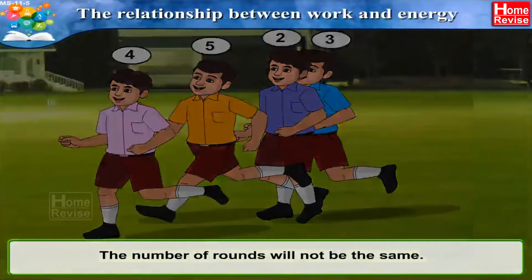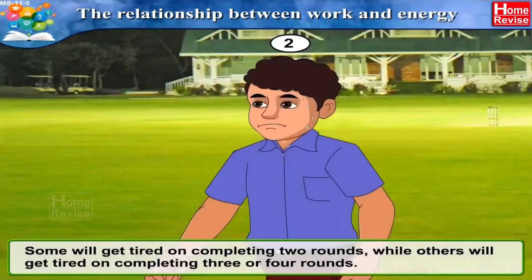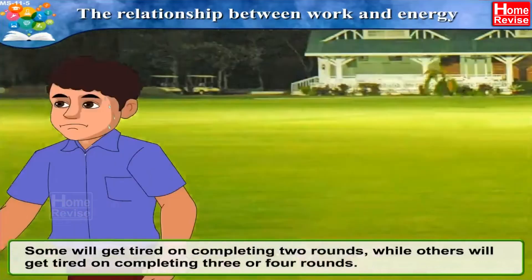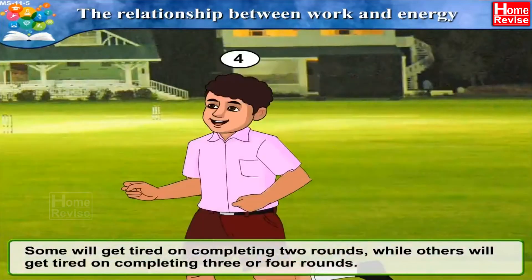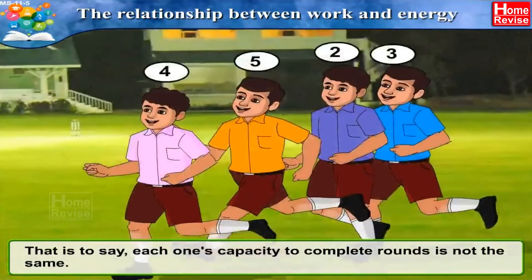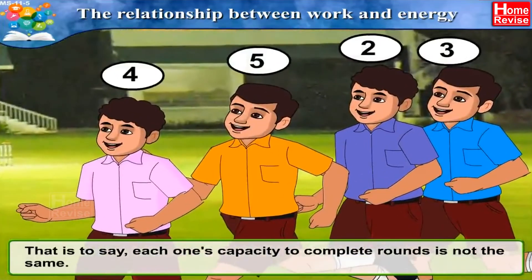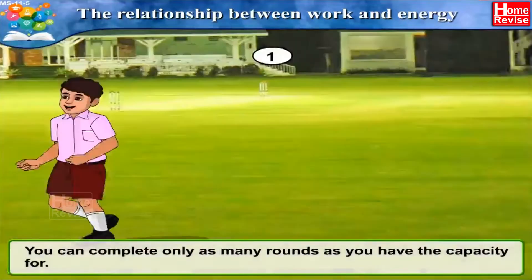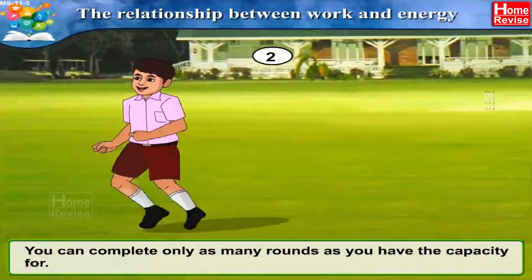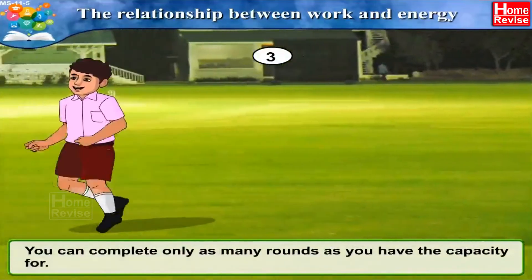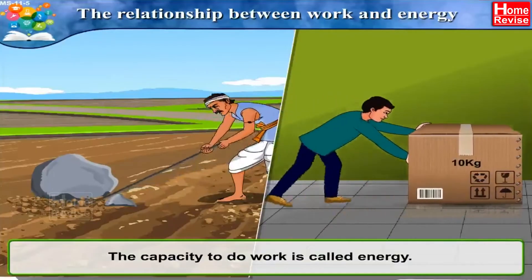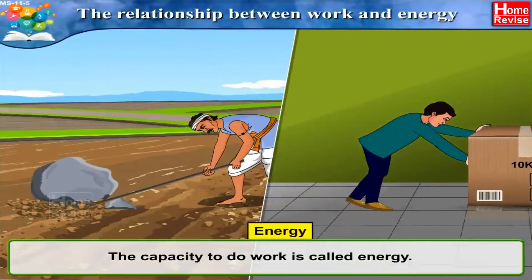Your friends will complete either more or less rounds than you. Some will get tired on completing two rounds while others will get tired on completing three or four rounds. Each person's capacity to complete rounds is not the same. You can complete only as many rounds as you have the capacity for. The capacity to do work is called energy.